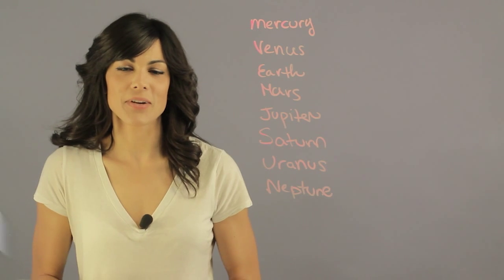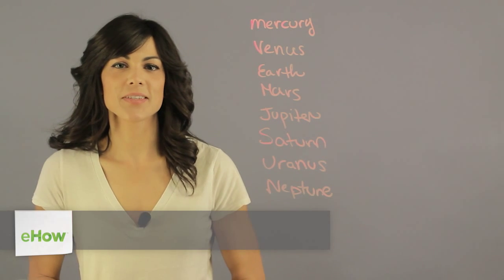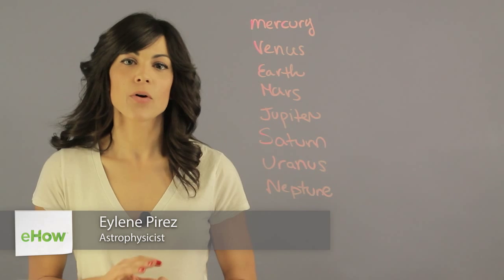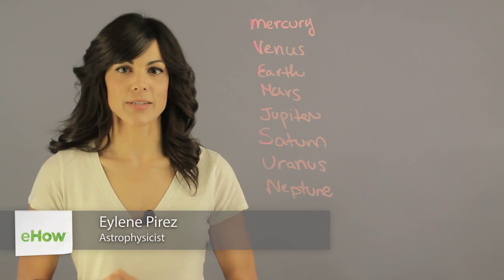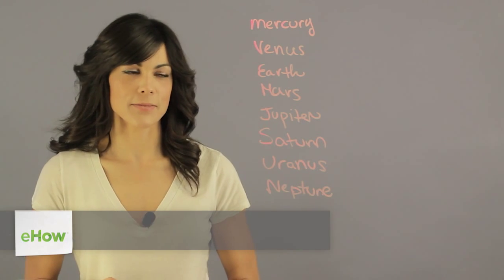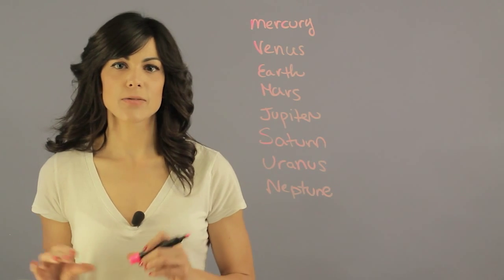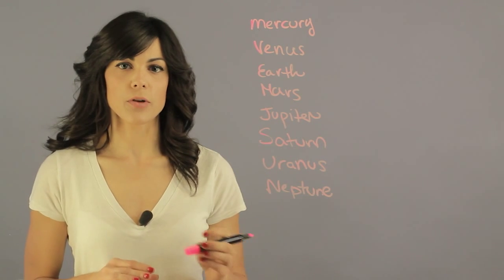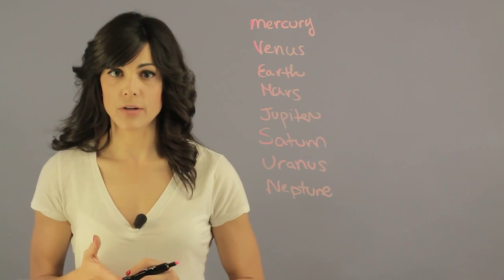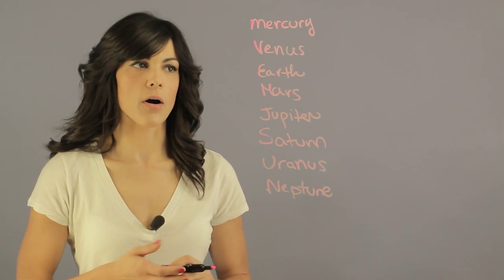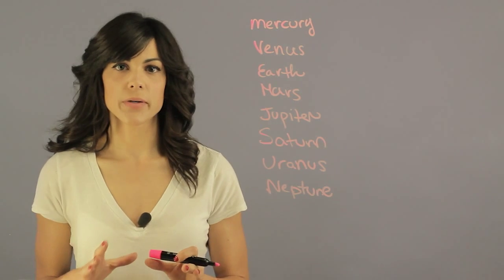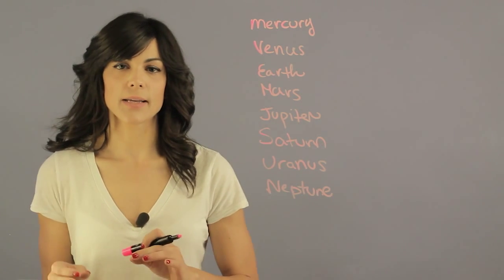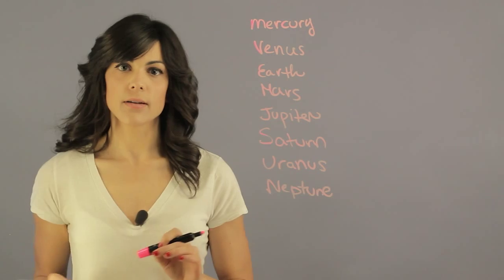Hi, my name is Aileen Perez and I'm an astrophysicist, and this is: do outer planets have smaller orbital periods than inner planets? So let's make a little table of the orbital periods in Earth years. An orbital period is how long it takes a planet to orbit the Sun.